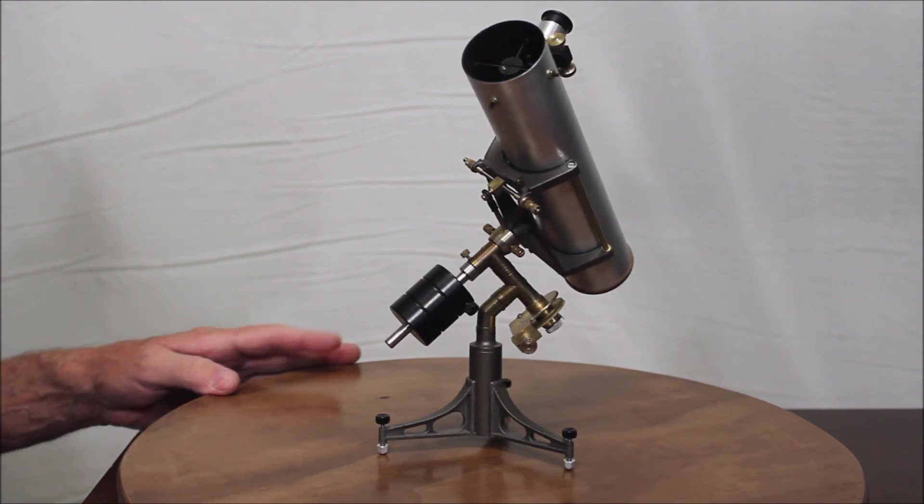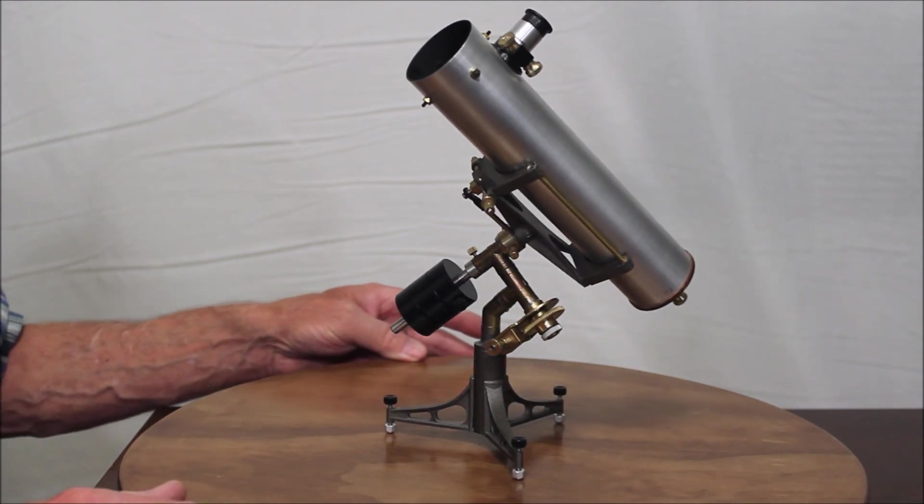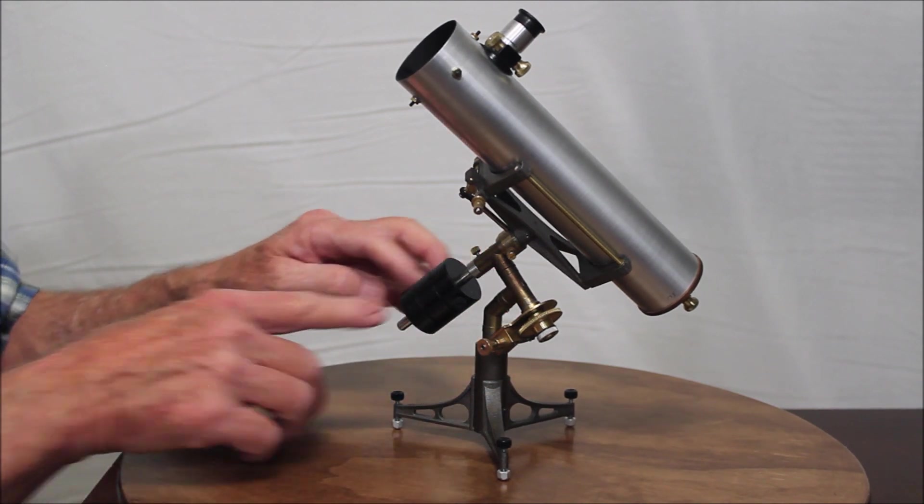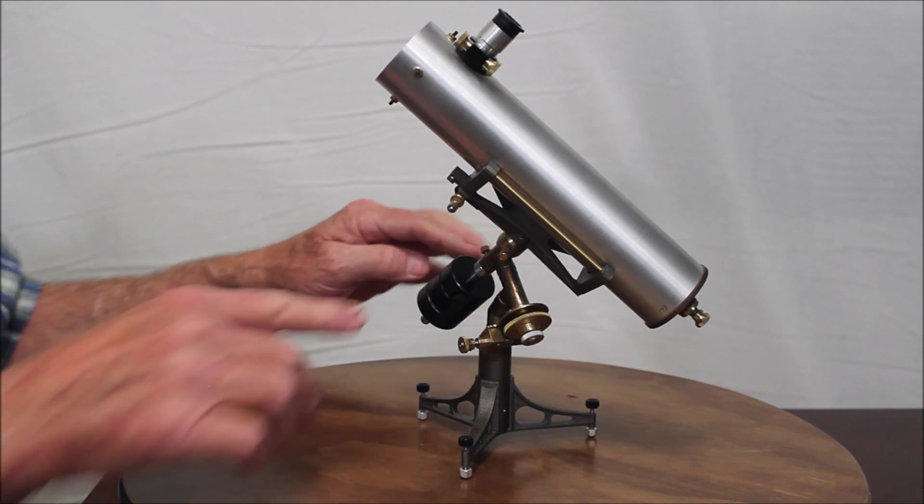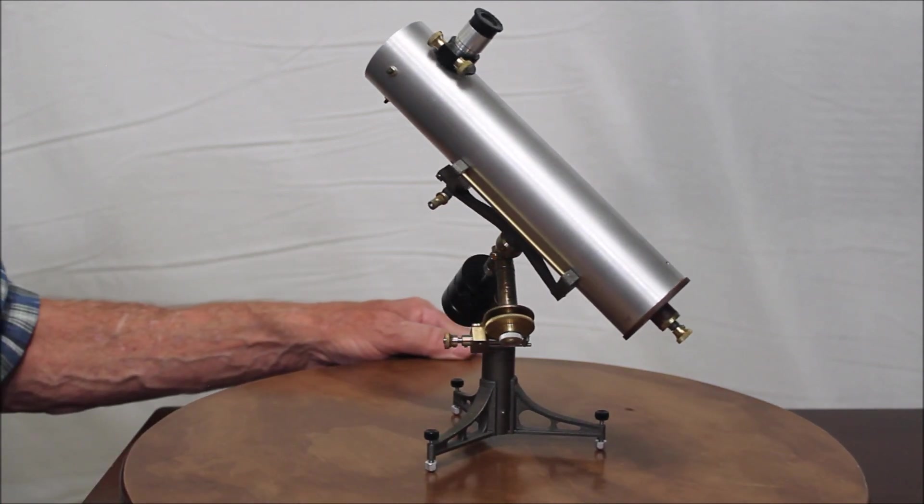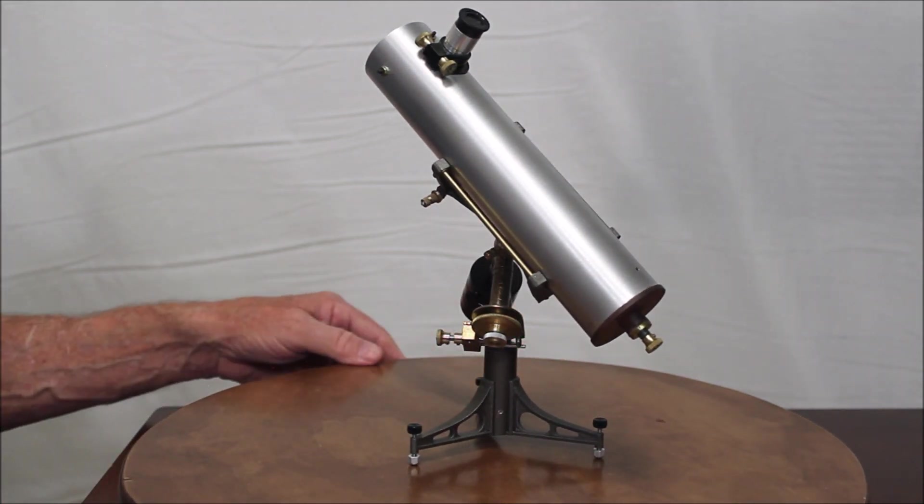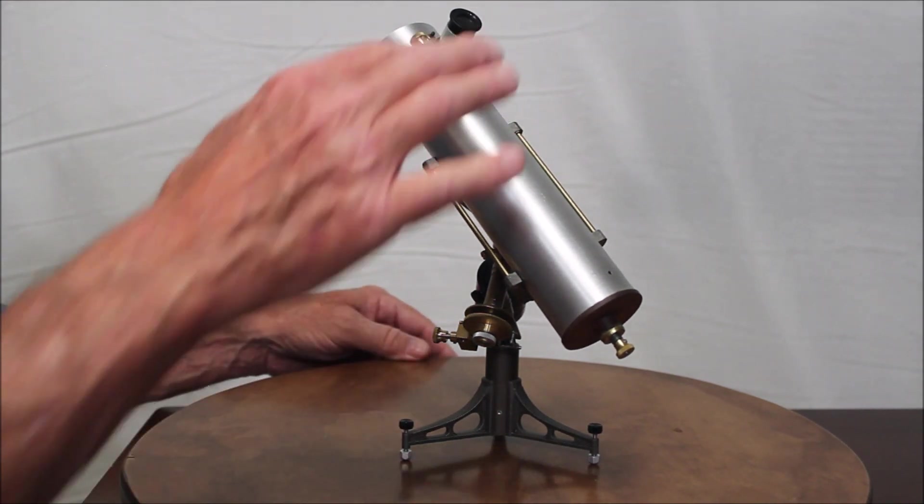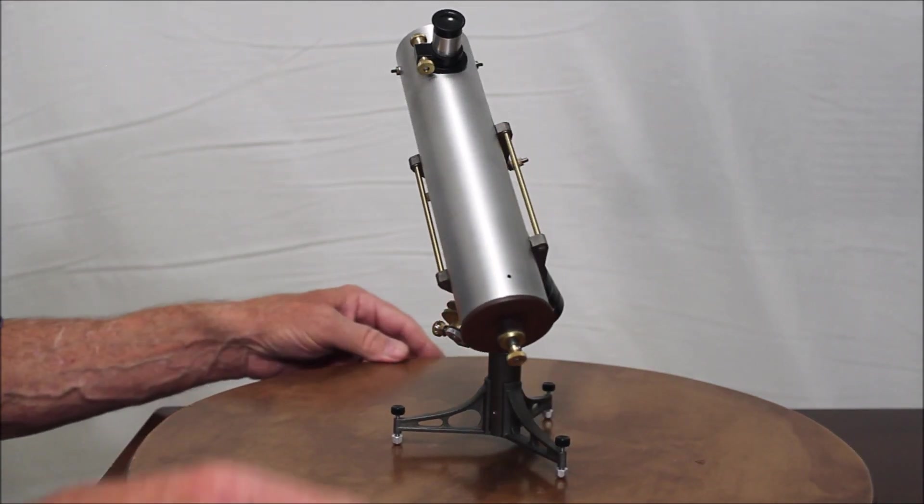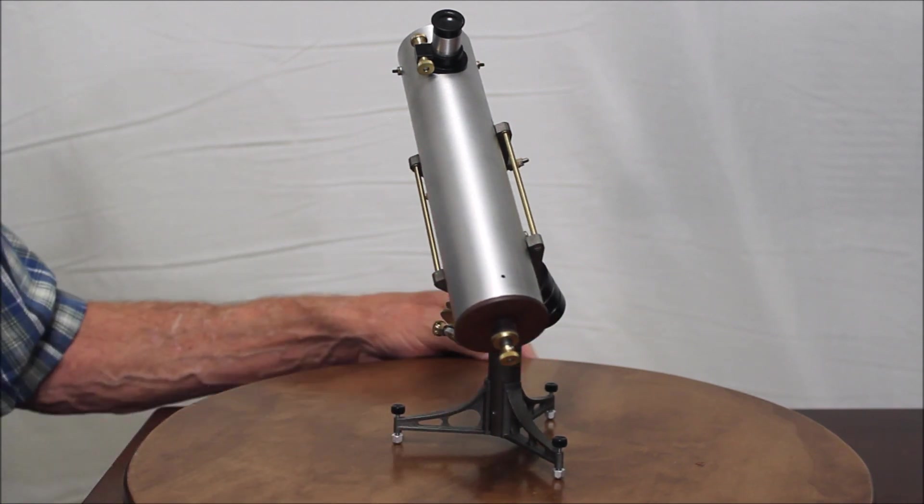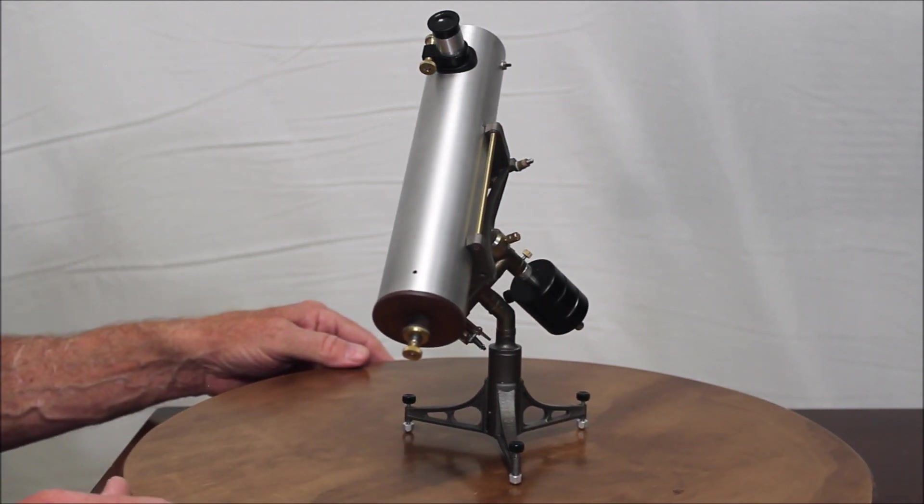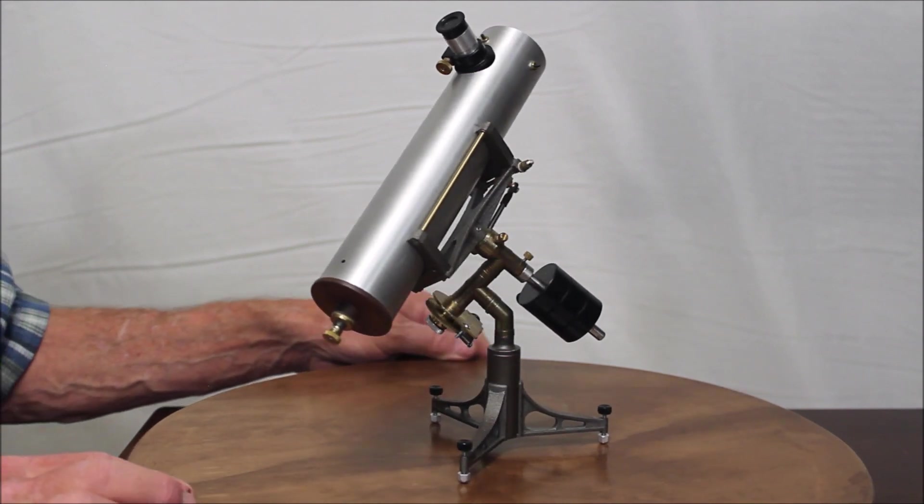A few other things that are dead giveaways that this is not a model. Look at the size of these counterweights. Even on a big monster telescope those counterweights, that's oversized. Those would be too big. And the eyepiece. Look at the eyepiece. That eyepiece would be that big, nine-inch eyepiece or something huge like that. Just a monster of an eyepiece.